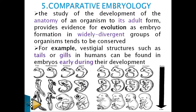Because we share similar embryonic stages with organisms like chickens, tortoises, salamanders, and fish, it means all these organisms had a common ancestor at some point but evolved into different species.